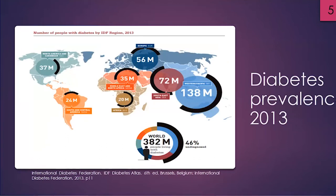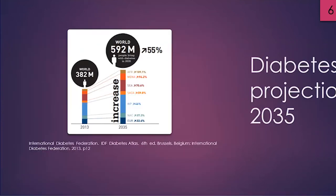My presentation is mainly about diabetes. The prevalence of diabetes in 2013 was 382 million people living with diabetes around the world. In the picture you can see how it's divided across different continents. A projection was also made for 2035 showing an increase of 55 percent — a total of 592 million people would suffer from diabetes. In Europe, they expect an increase of a little more than 22 percent.